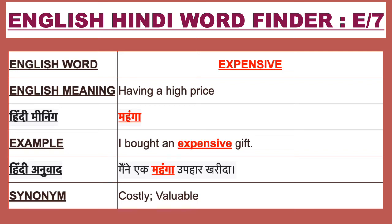Hello guys, welcome to my channel English Hindi Word Finder. Today we are going to learn some English words starting from alphabet E. So let's start. Our first English word is 'expensive'. The English meaning of 'expensive' is having a high price.